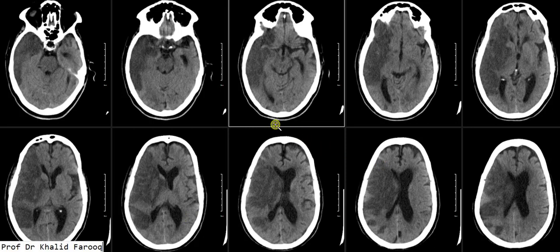Subtle dilatation of the left lateral ventricle is also identified. So this is an example of acute ischemic insult in the distribution of the right MCA, leading to mass effect on the ipsilateral right lateral ventricle and third ventricle with mild left sided midline shift, while mild dilatation of the left lateral ventricle is also seen. Now we will see some hemorrhagic strokes.